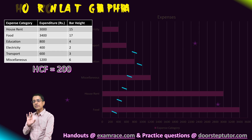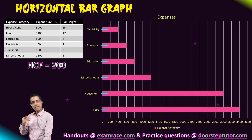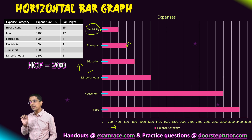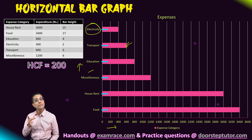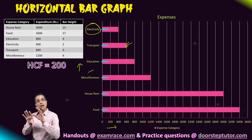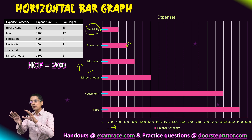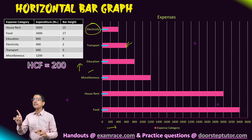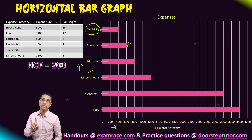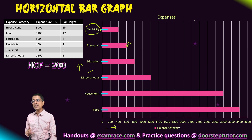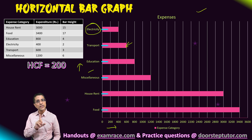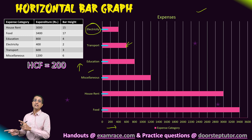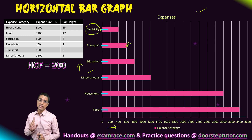For exam purposes, it is also important to understand horizontal bar graphs. Because typically when you are asked to find out the values — to read the bar graphs — you would be given horizontal bar graphs. So to read the values, horizontal bar graphs become important; to draw bar graphs, vertical bar graphs become important.